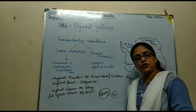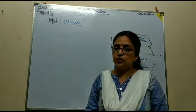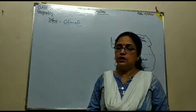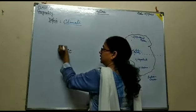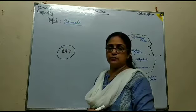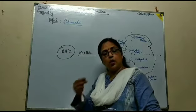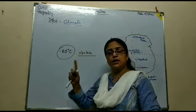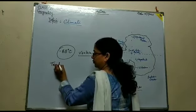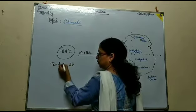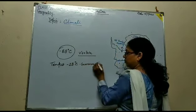So today we discussed about the physical features of the continent. Our next topic is climate. Antarctica is one of the coldest continents. The coldest temperature ever recorded here is minus 88 degrees centigrade, recorded by the Russian research station named Vostok. The temperature during the summer season, which is around the month of January, is about minus 28 degrees centigrade.